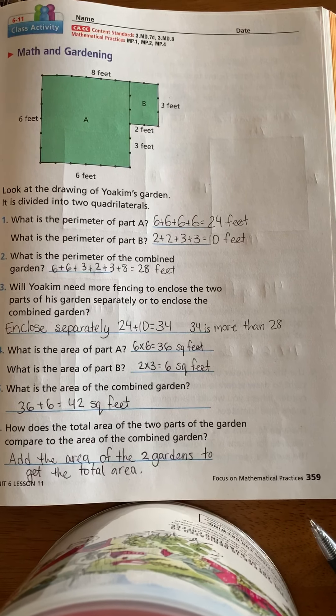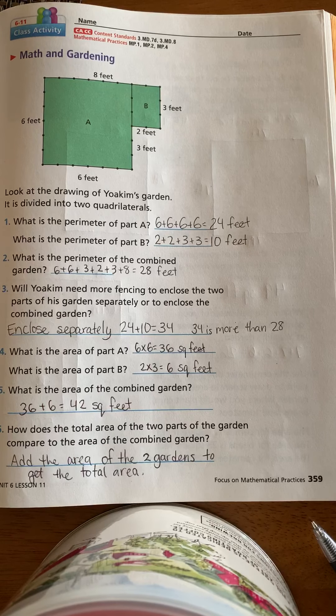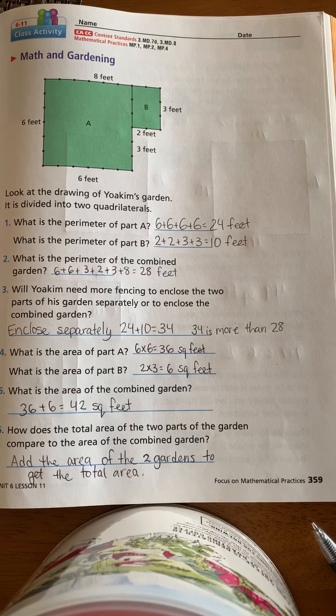Lesson 611, math and gardening. Look at the drawing of Joaquin's garden. It is divided into two quadrilaterals.